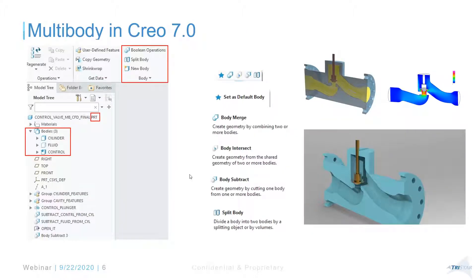Starting CREO 7.0, when you create a new part or open an existing part, by default you'll see Bodies. PTC now allows you to have one single part with different bodies inside — solid bodies, construction bodies that don't affect mass properties, or bodies that do. It's very flexible and allows easier modeling. It also supports Boolean operations such as merge, intersect, subtract, and split body. From the design side all the way to the simulation side, there are many use cases for multi-body. That's a big enhancement in 7.0.